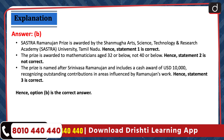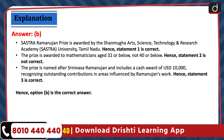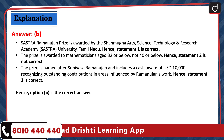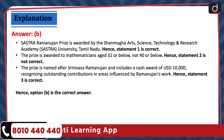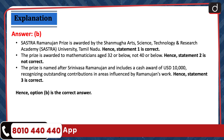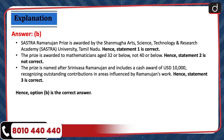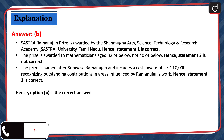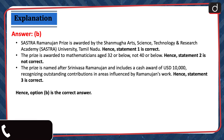The prize is named after Srinivas Ramanujan and includes a cash award of 10,000 US dollars, recognising outstanding contributions in areas influenced by Ramanujan's work. Hence, statement 3 is correct. Option B is the correct answer.